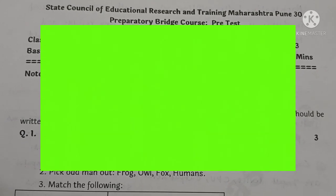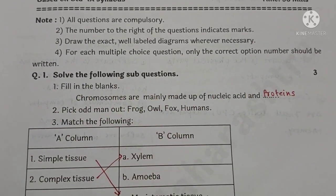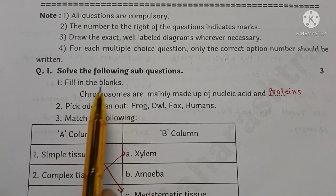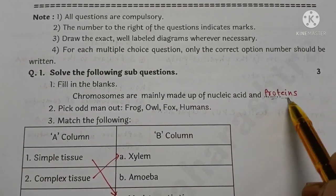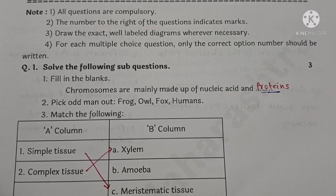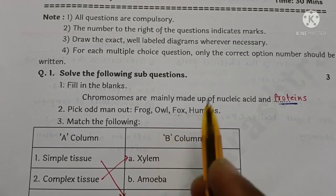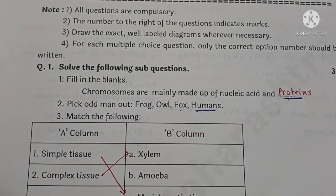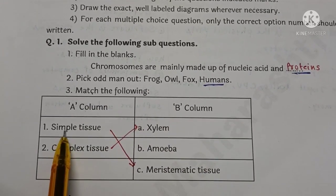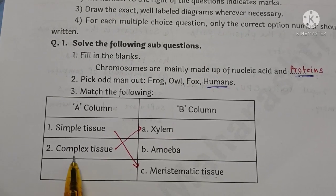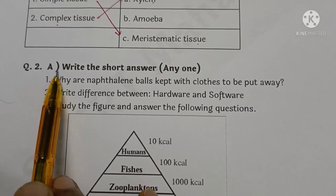Question No. 1: Solve the following sub-questions. First, fill in the blanks — chromosomes are mainly made up of nucleic acid and proteins. The answer is proteins. Next, pick the odd one out — from all options, humans is the answer. Next, match the following: simple tissue, meristematic tissue, complex tissue, and xylem.